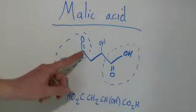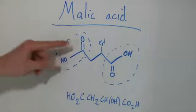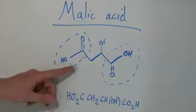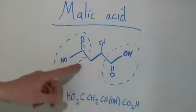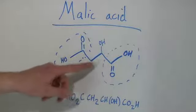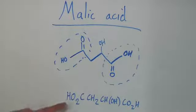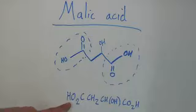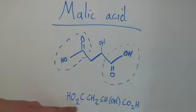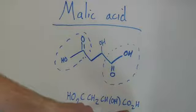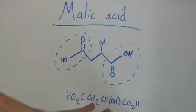A carboxyl group is simply a carbon double bonded to an oxygen with an OH, or hydroxyl, on the other end. There are two different carboxyl groups and two other carbons with a hydroxyl in the middle. The actual chemical formula for malic acid is HO2CCH2CHOHCO2H. These two ends are just the carboxyl groups, so you have two carbons in the middle.